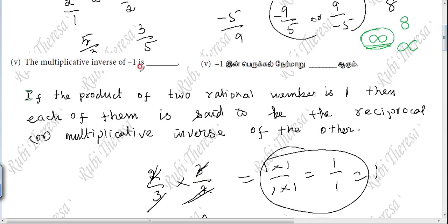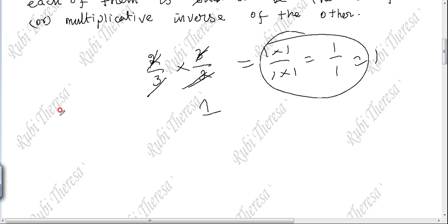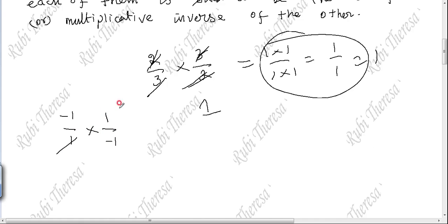Now, the multiplicative inverse of minus 1. Minus 1 — what do you think? Reciprocal of minus 1 is 1 by minus 1. 1 and 1 will cancel. This will cancel. Result is minus 1. Right? Correct?